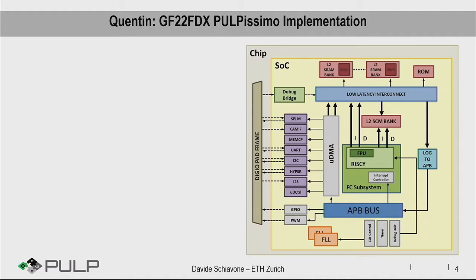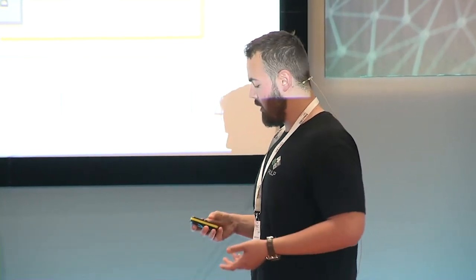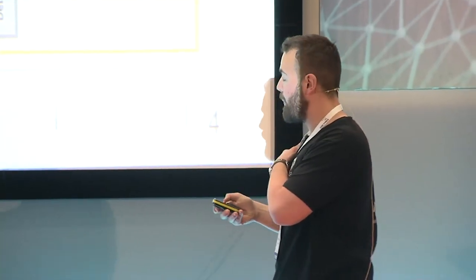This is the PULPissimo architecture. Differently from PULPino, it has a rich set of peripherals with an autonomous IO subsystem, and a much more complex memory subsystem. The implementation in 22 nanometers has half a megabyte of memory on chip. It's called Quentin — for Quentin Tarantino. The rich set of peripherals includes standard ones like I2C, UART, and also high-bandwidth peripherals like quad SPI, camera interface, HyperRAM, and others. It still uses our RISC-V IPs as the processing element, plus a couple of FLLs for power management.